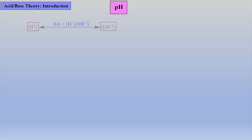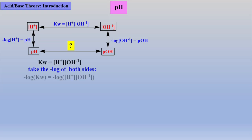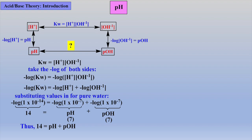Summarizing what we have learned so far, we can convert between proton and hydroxide concentration by the previously derived equation for Kw, and if we take the negative log of the proton concentration, we can get the pH. Similarly, if we take the negative log of the hydroxide concentration, we will yield the pOH. So now, let's derive our final relationship between pH and pOH. Starting with the Kw expression, we will take the negative log of both sides. Then, substituting values in for pure water gives the final expression 14 equals pH plus pOH. Thus, if pH is known, pOH can be calculated, and if pOH is known, pH can be calculated. Thus, our rectangle is complete.